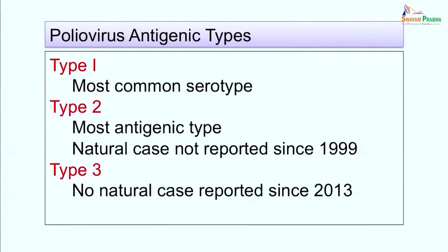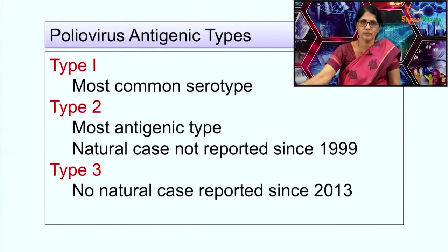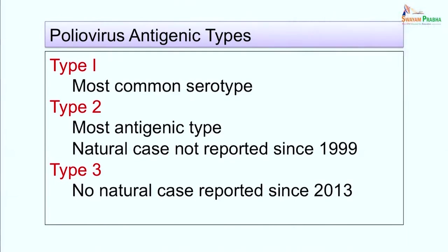Based on the D antigen, poliovirus is classified into 3 types. Type 1 is the most common serotype and has been responsible for most epidemics of poliomyelitis; naturally occurring poliomyelitis is currently caused by type 1. Type 2 is the most antigenic type, and no natural case due to type 2 has been reported since 1999. Type 3 has not been reported since 2013. At present, naturally occurring cases are only due to type 1 poliovirus.